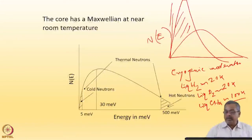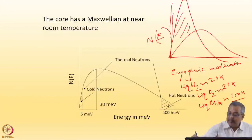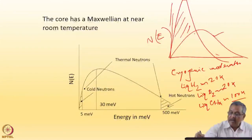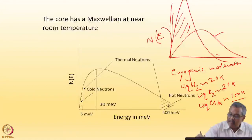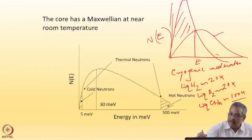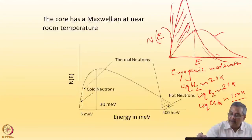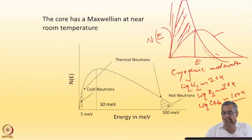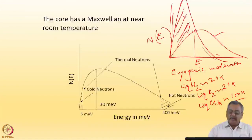These moderators capture neutrons and re-thermalize them — the Maxwellian is re-thermalized into another Maxwellian at low temperature. In the process you do not multiply the total number of neutrons, but in a certain region of energy you have a gain in number of neutrons at the cost of high energy neutrons. These sources can be used for experiments where low energy neutrons are preferred.